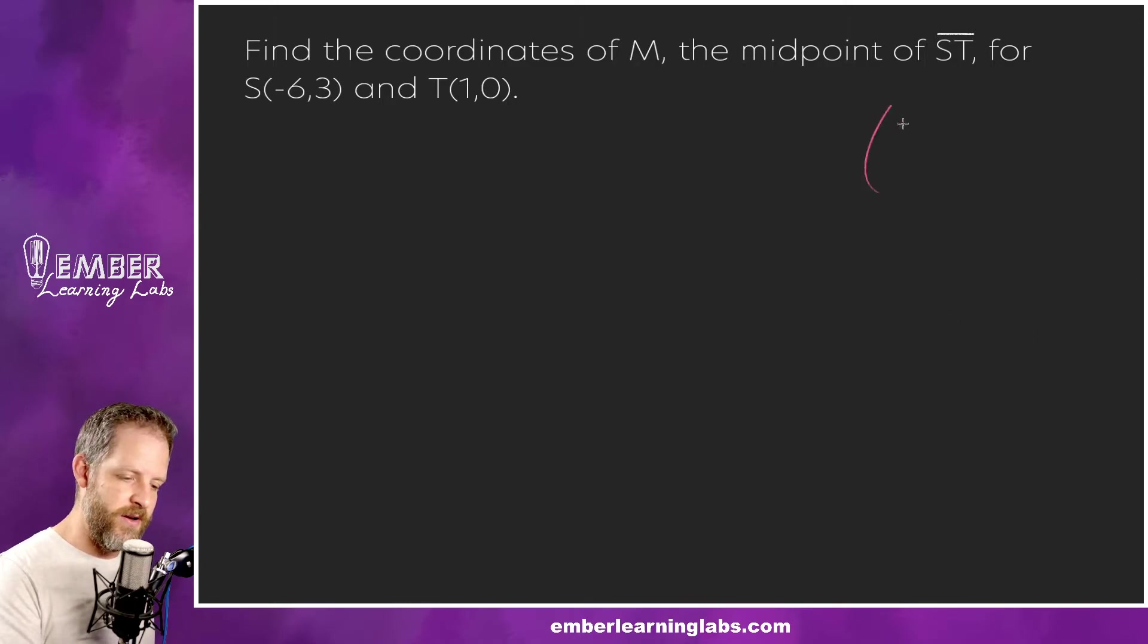So all we have to do is plug this into our formula. Now what was our formula? It was x1 plus x2 over 2 for the x part, and for the y part it's y1 plus y2 over 2. So there's our formula. Let's plug it in and see what happens. We've got point, we'll call this point one and this point two. It doesn't really matter as long as we stay consistent. So x1 in this case would be negative six and x2 would be one, and then we're going to divide that by two.